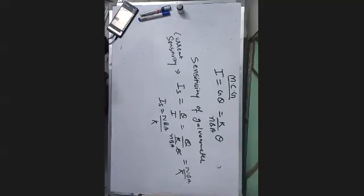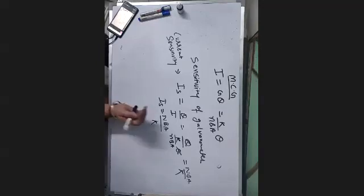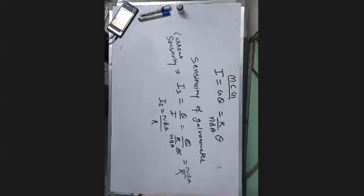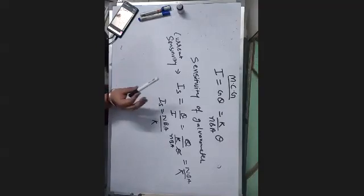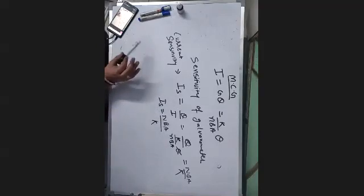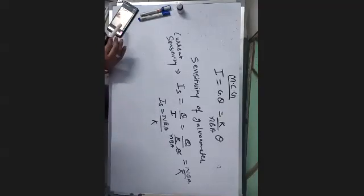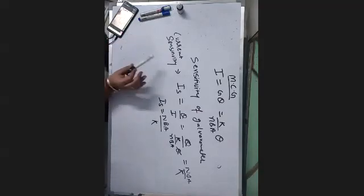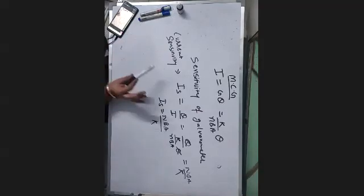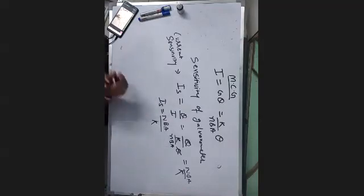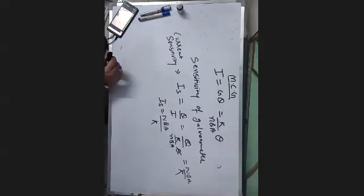If you are asked the definition: when a galvanometer shows a large deflection even when a very small value of current passes through it, and it still shows a large deflection, then your galvanometer is a sensitive galvanometer.